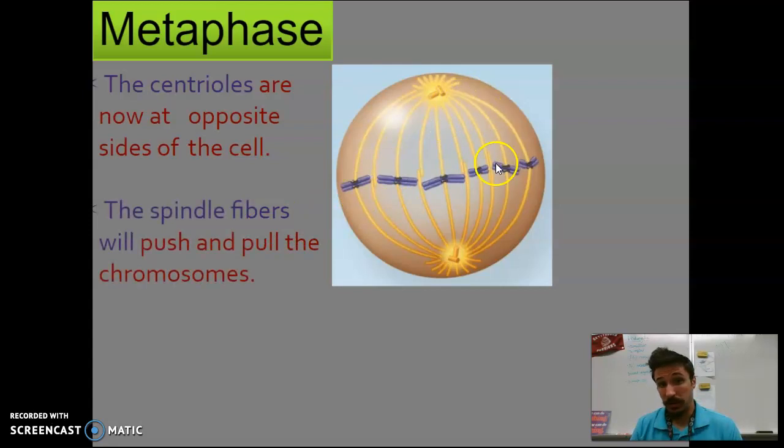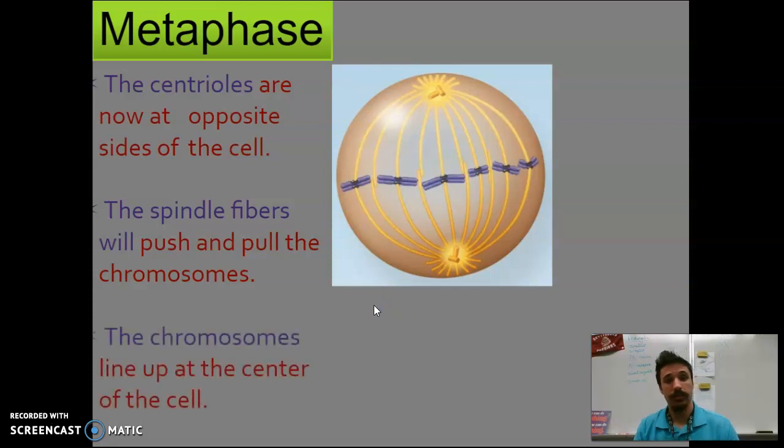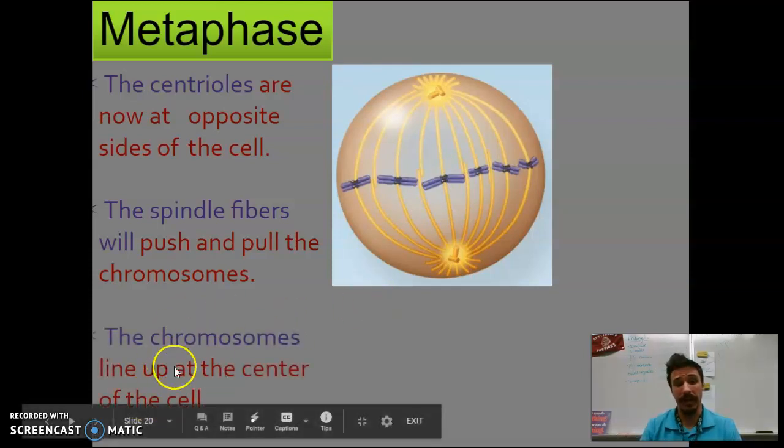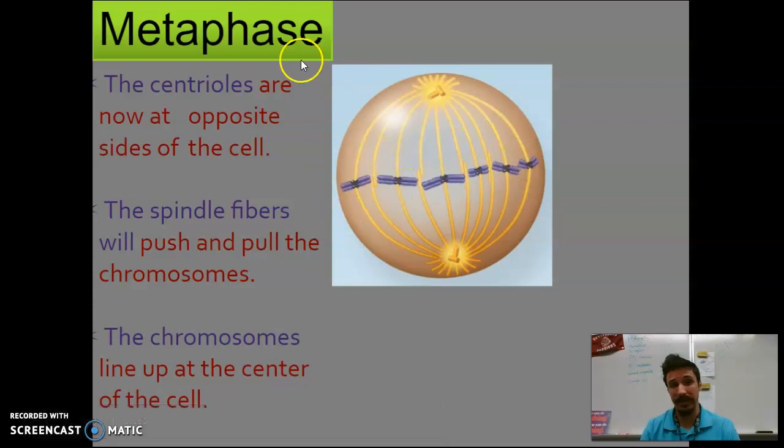And the spindle fibers, these microtubules, these yellow arms, they're going to push and pull chromosomes until all the chromosomes are lined up across the middle. So that way when the cell divides down the middle, half of this chromosome, aka one chromatid, will go that way, and the other chromatid will go this way, being pulled apart by their centromere. So again, lining up at the center of the cell, that is called the metaphase plate and occurs in metaphase. Go figure.